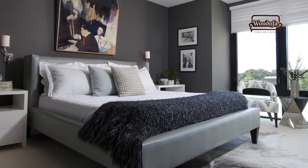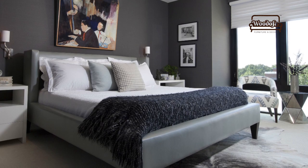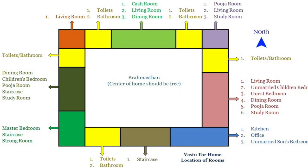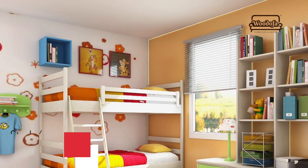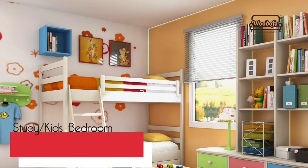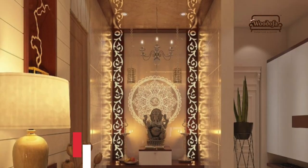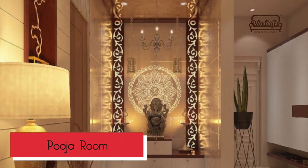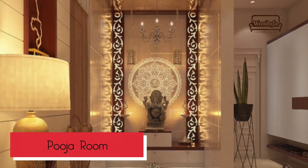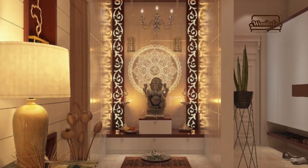Similarly, for a study area or a kids' room, you might go with the north-east or east corner of the house — that will be a good space for your study or kids' bedroom. Even for the puja space, the north-east corner is the best location for having a puja room or a puja area.